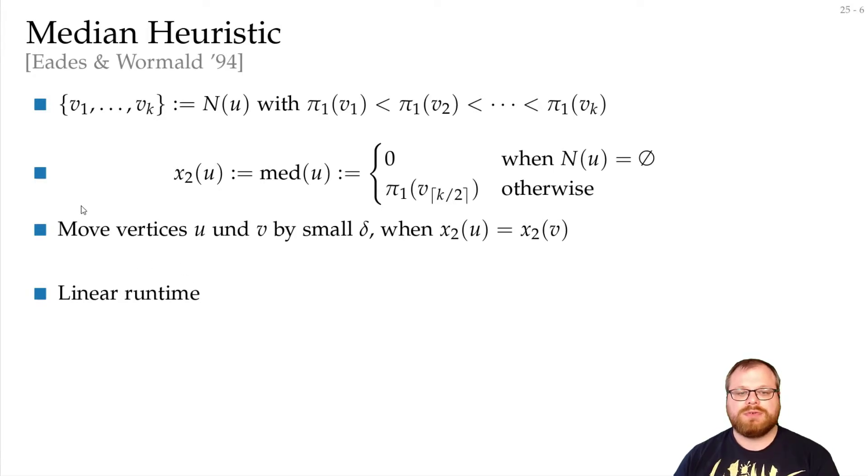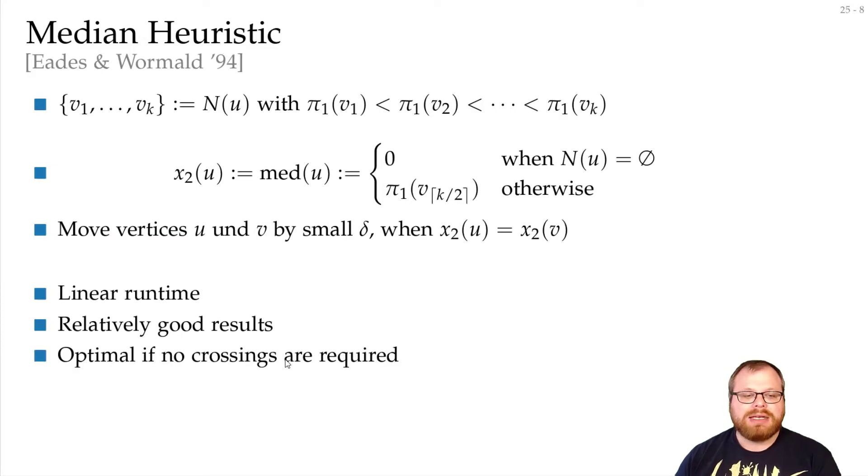This again has a linear runtime, it's almost the same algorithm as before. We get relatively good results, and it's also optimal if no crossings are required. But here, the worst case is much better - we have a 3 approximation factor.